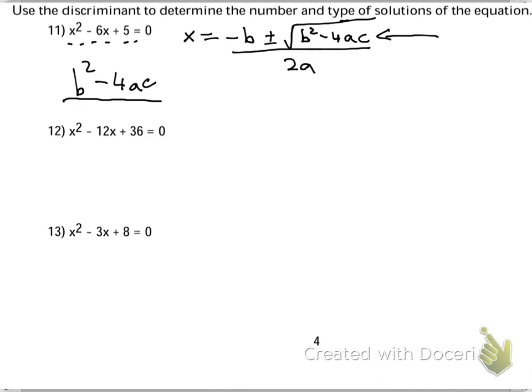B squared. So that is negative 6 squared minus 4 lots of a. A is going to be 1 and c is going to be 5. That will give us 36 take away 20, which is 16.